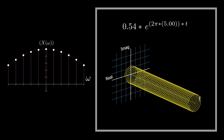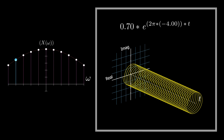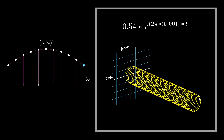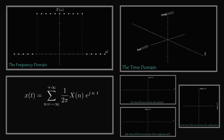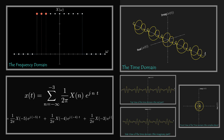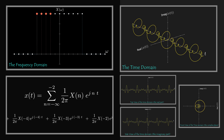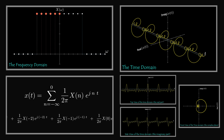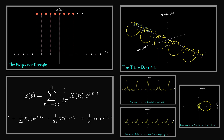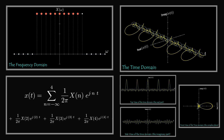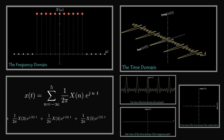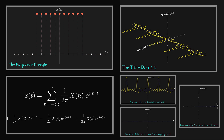By analogy, if we have a discretized frequency domain signal, then each sample represents a complex exponential in the time domain with magnitude equal to the sample value, and the speed of rotation depends on the frequency of the sample. Since the frequency domain signal is the summation of all the samples, the associated time domain is the summation of all the time domain complex exponentials associated with each frequency domain sample. Note that this is not the inverse discrete time Fourier transform — recall that in the discrete time Fourier transform, the time domain is discrete and the frequency domain is continuous and periodic. Here, by analogy, the frequency domain is discrete and the time domain is continuous and periodic.